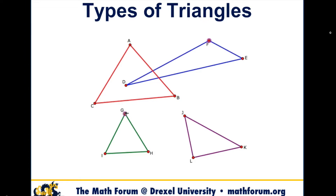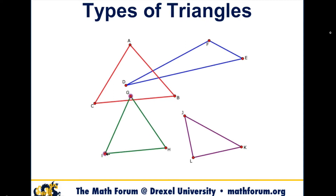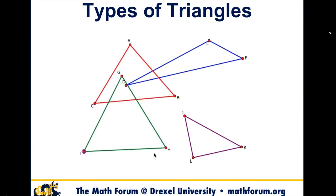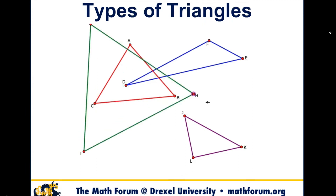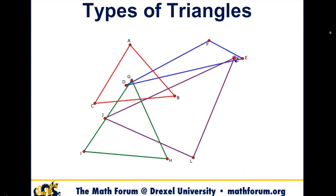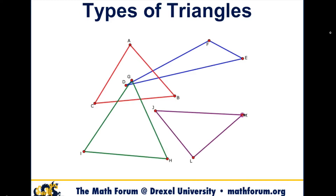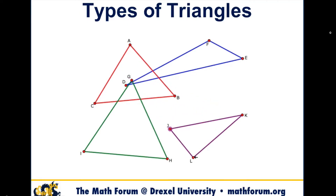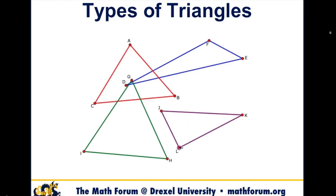The way that we usually teach shapes, we give them a name like 'isosceles' and then we give them a laundry list of things that go along with that name, and they're somehow supposed to stick that in their brain. Instead, let them make the list of things — that red triangle, here's a lot of things we know about it — and then you say, we have a name for that, we call it isosceles. Now they have a place to put that name because they've already internalized all the other pieces.